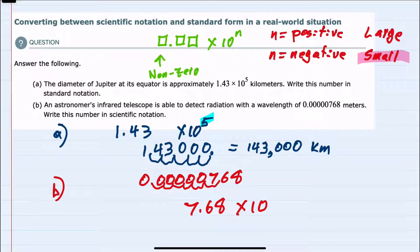I moved the decimal 6 times. Since this is a small number, this is times 10 to the negative 6. So this is our number written in scientific notation: 7.68 times 10 to the negative 6.